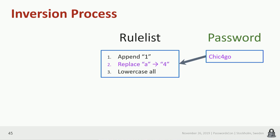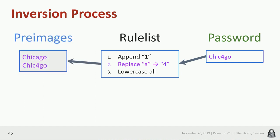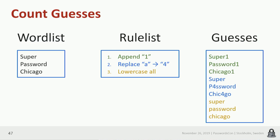Now the next rule: "replace A's with fours." Working backwards — what word list entries would produce "Schick4Go" if you replace A's with fours? There are actually two possibilities: "Chicago" with an A, where the A turns into a four; or if you started with "Schick4Go" already — no A's — so it stays the same. So there are two pre-images in the word list that, if they're there, mean this rule will guess "Schick4Go." We just use an efficient representation in memory of our word list, like a hash table, look up these pre-images, and determine whether the password is guessed — without actually making any guesses.